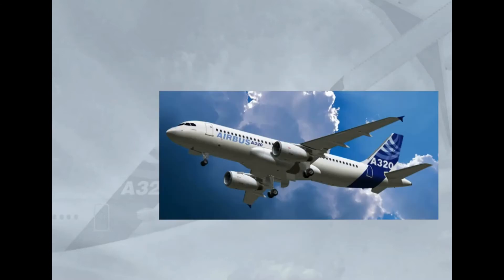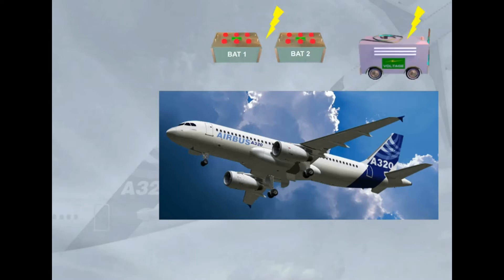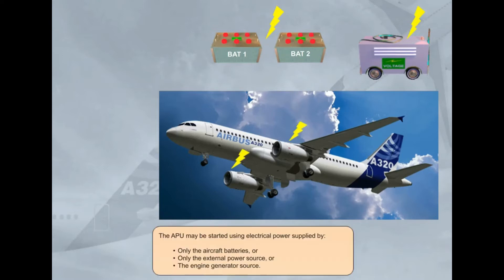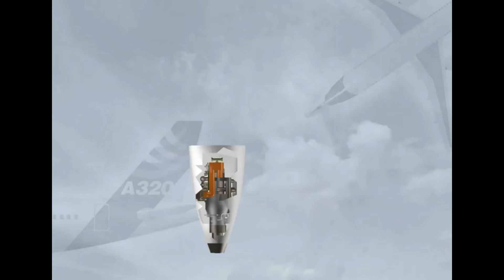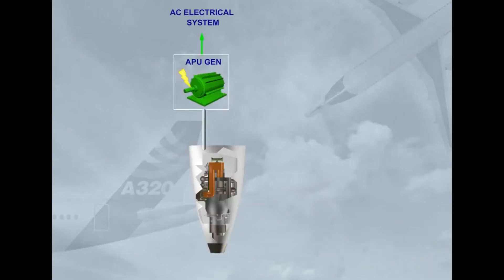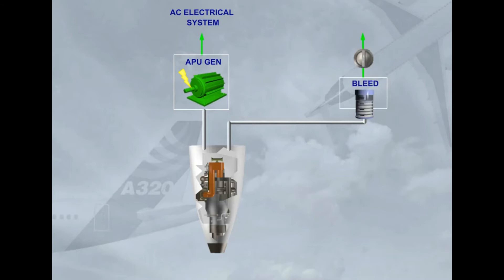The APU may be started using electrical power supplied by only the aircraft batteries, only the external power source, or the engine generator source. The APU provides AC electrical power for the aircraft electrical system and bleed air for engine start and/or air conditioning.